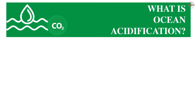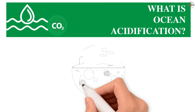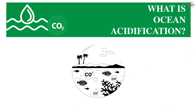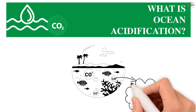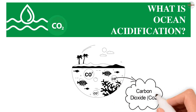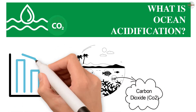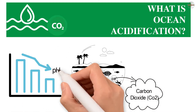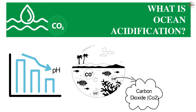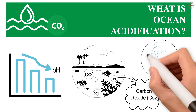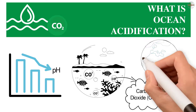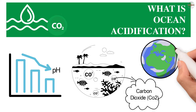What is ocean acidification? Ocean acidification is the process by which the ocean absorbs carbon dioxide from the atmosphere, thus decreasing the ocean's pH. The ocean absorbs up to one-third of the carbon dioxide CO2 in the Earth's atmosphere.